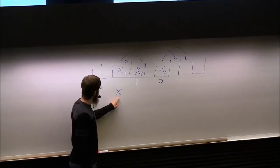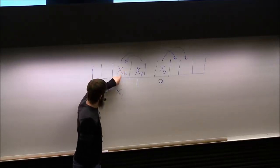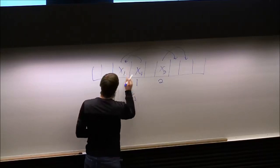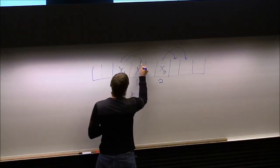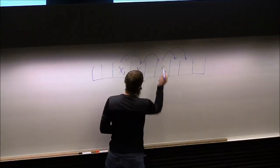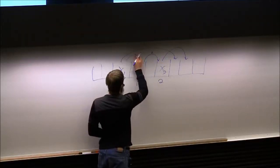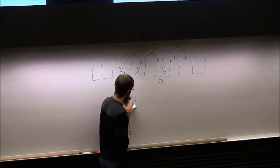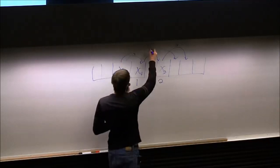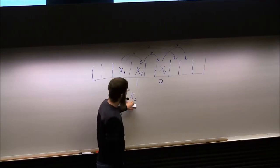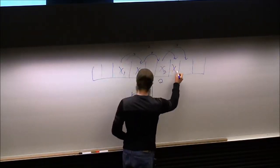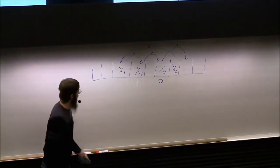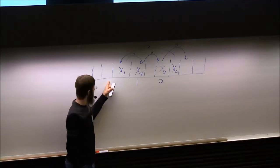Now we need to insert the kicked-out element — its other mapping is to a slot that's full. So we'd kick that one out, and put our element there. Now we put the second kicked-out element into the other bin it can go into, which is empty. And now we're done inserting — as long as there's 20% empty buckets, insert time for a single element will be constant time.